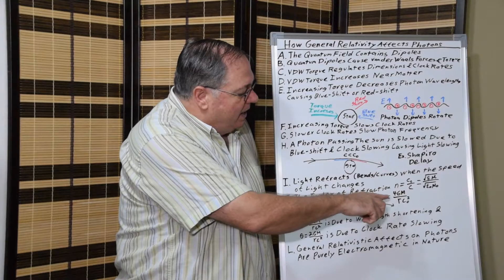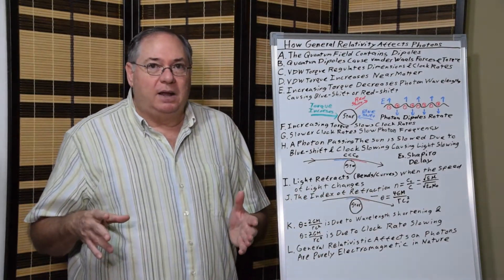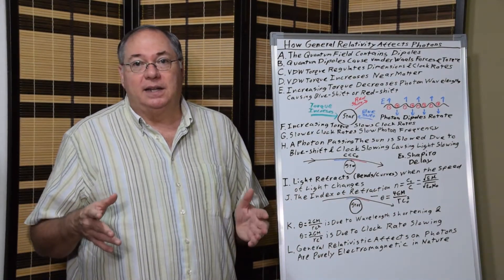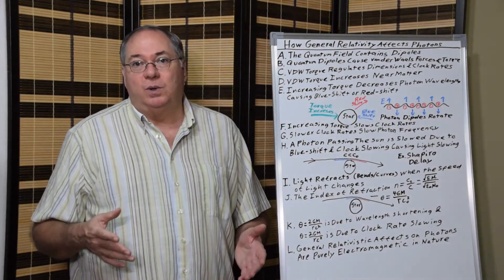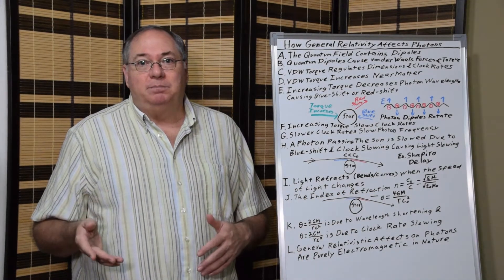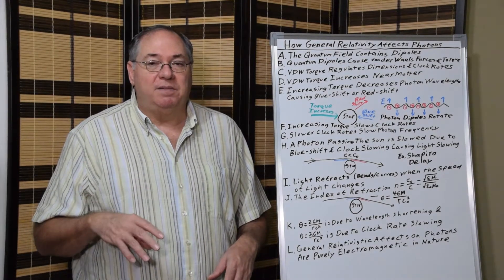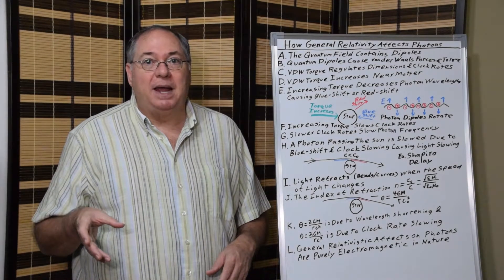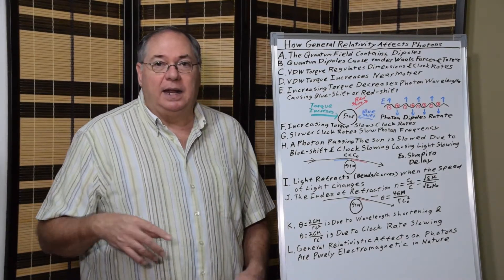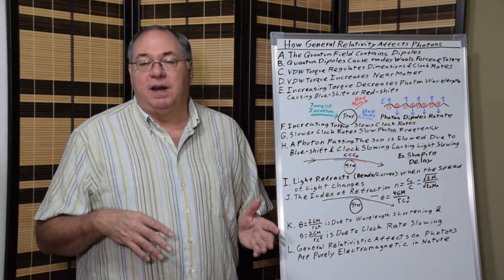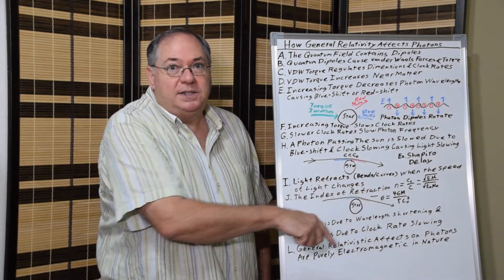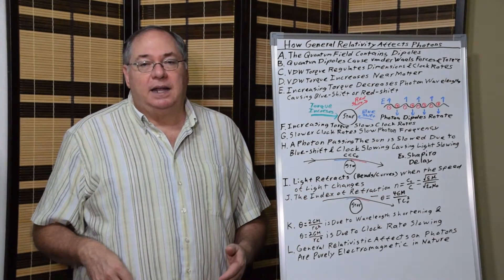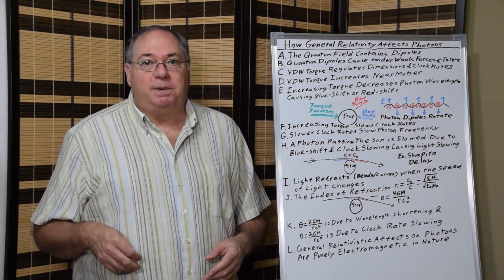We know from the work Einstein did that the angle theta is equal to 4GM over rc squared, where G is the gravitational constant, M is the mass of the body, and r is the radius, the closest approach radius of the photon, and c squared is of course the speed of light.